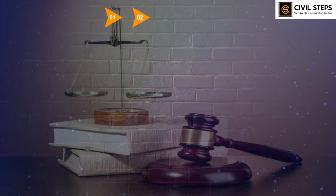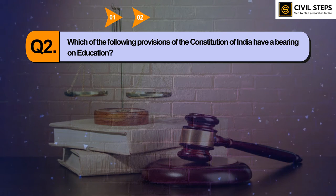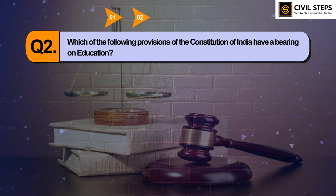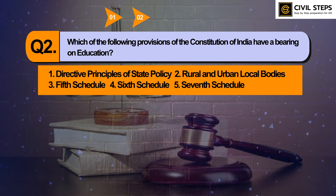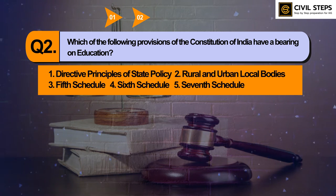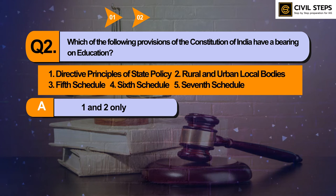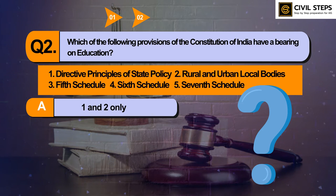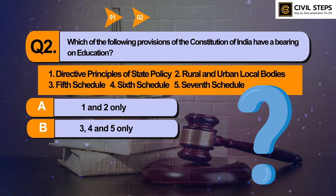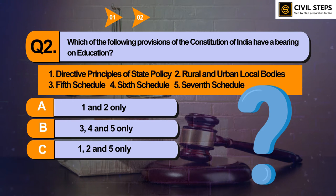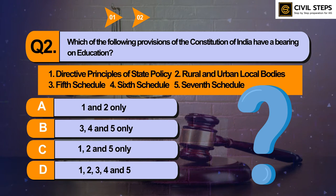Question number two: which of the following provisions of the Constitution of India have a bearing on education? First, Directive Principles of State Policy. Second, Rural and Urban Local Bodies. Third, Fifth Schedule. Fourth, Sixth Schedule. Fifth, Seventh Schedule. Option A: 1 and 2 only. Option B: 3, 4 and 5 only. Option C: 1, 2 and 5 only. Option D: 1, 2, 3, 4 and 5.